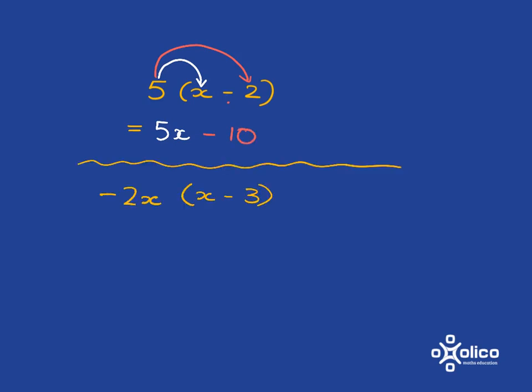Let's do a slightly more complicated one. Here we've got negative 2x and that must multiply with x minus 3.